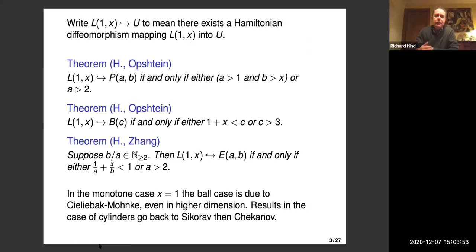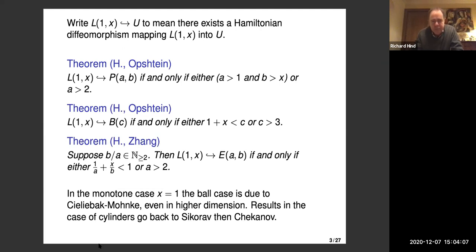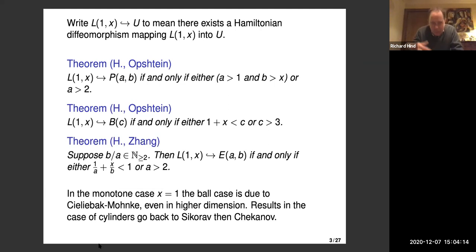The product of Lagrangian tori is just the singular part of the boundary of a polydisc. We're interested in embeddings of Lagrangian tori, and for this to make sense it has to be a global symplectomorphism. You can always find embeddings of tubular neighborhoods, so the question is: when does there exist a global symplectomorphism of R⁴ mapping a Lagrangian torus into a particular domain?